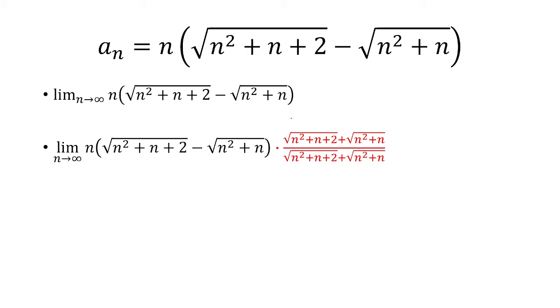And so now you basically have a situation of a minus b times a plus b. And so this is going to be a difference of two squares, so it's a squared minus b squared. And so basically the square roots are going to cancel, and you're just left with whatever is inside the square root.